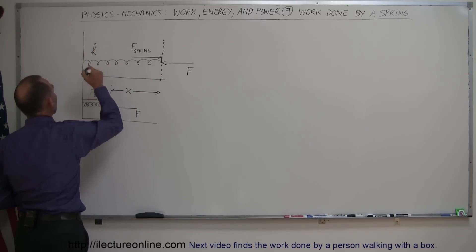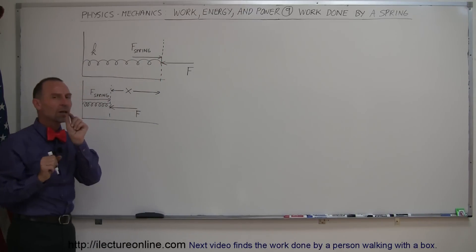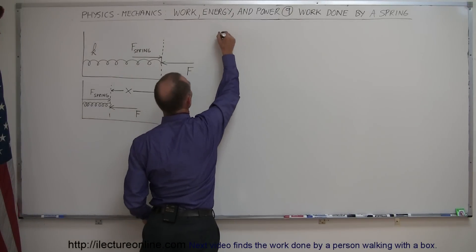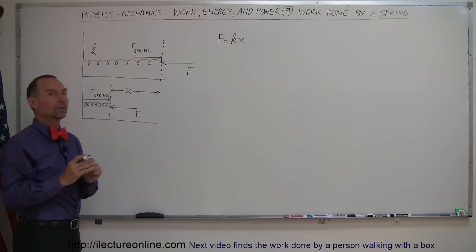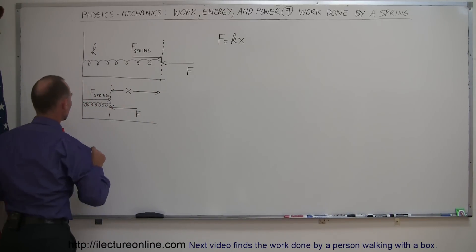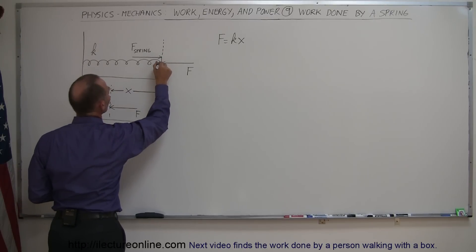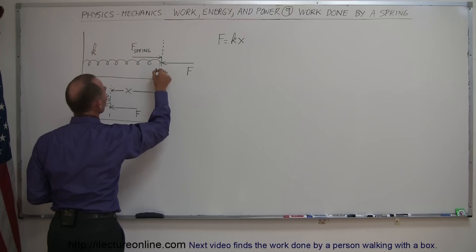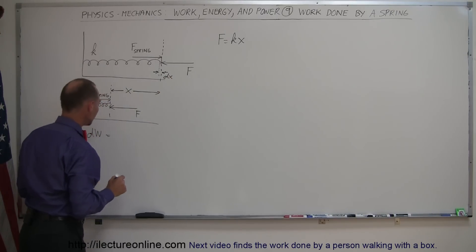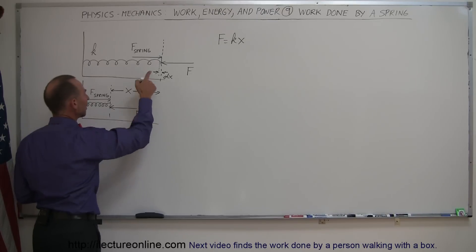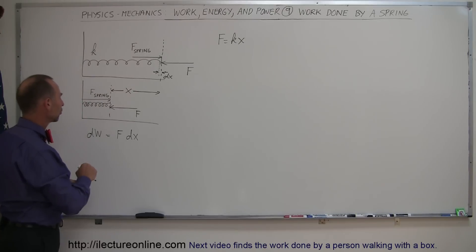The spring has a spring constant k. Because the force required to push in the spring is not constant — it's equal to k times x — the more we compress the spring, the more force we need. So we consider a small amount of work done by moving the spring a small displacement dx, where dw equals the force at that moment times that small compression distance.